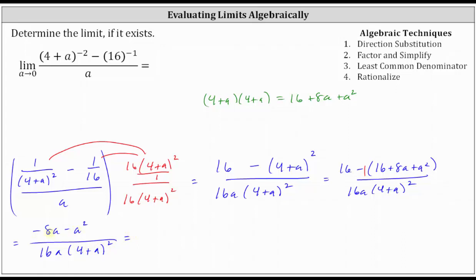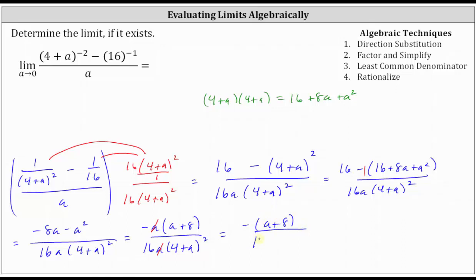Now let's factor the numerator. Notice there's a common factor of a — let's factor out negative a. If we factor out negative a, we'd be left with positive eight plus a, or a plus eight. Notice if we distribute, we still have negative a squared minus eight a. In this form, we have a common factor of a between the numerator and denominator, so we'll simplify: a divided by a simplifies to one. By simplifying out the a, we are eliminating the removable discontinuity at a equals zero, which is why we couldn't perform direct substitution to determine the limit.